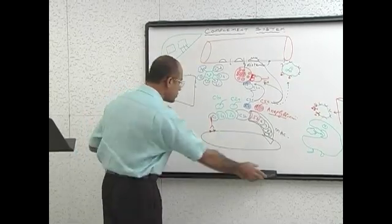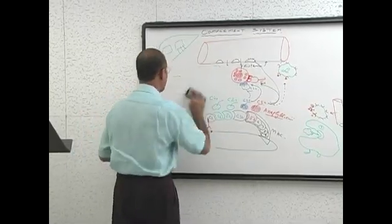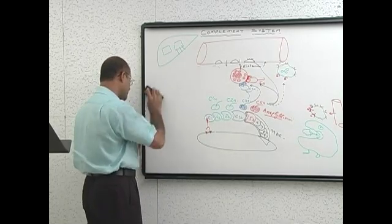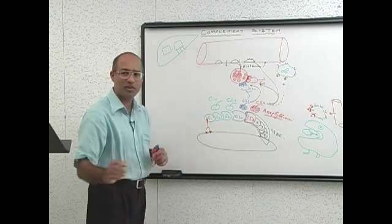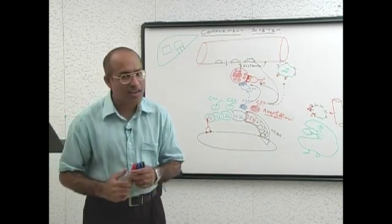Which cells in our body produce antibodies? Of course B cells, but the excellent doctor will say activated B cells, which are called plasma cells.